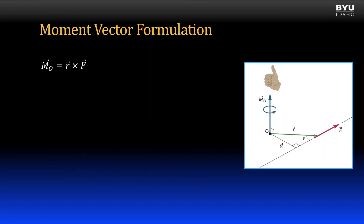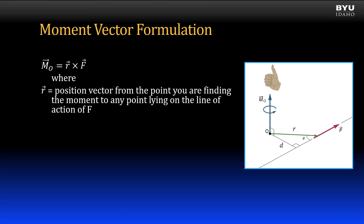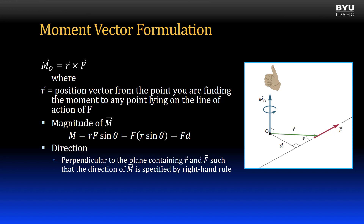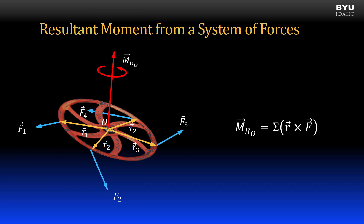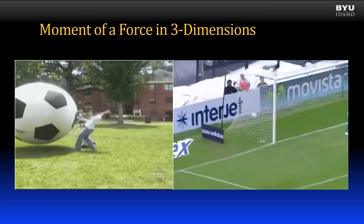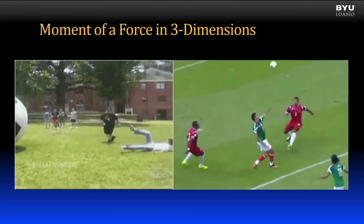Let's summarize the key information. The moment of a force is a vector and can be found as the cross product of a position vector and a force vector, where the position vector is oriented from the point you are finding the moment to any point on the line of action of the force. The magnitude of the moment vector is the magnitude of the position vector times the magnitude of the force vector times the sine of theta. The direction is perpendicular to the plane formed by the force vector and position vector, and sense is determined by the right-hand rule from R to F. For vectors in Cartesian notation, apply the cross product using this equation. A resultant moment of a system of forces can be found by summing the moment of each force. Watch the following example videos to see how to apply this information.